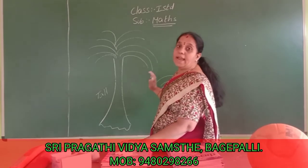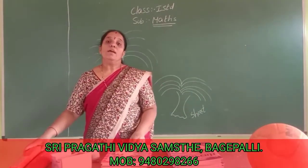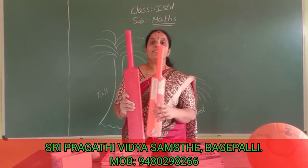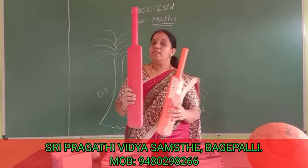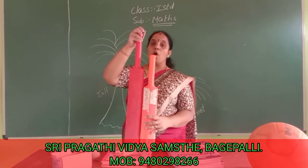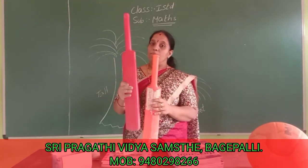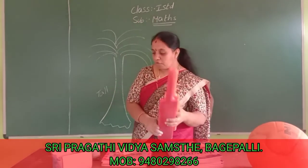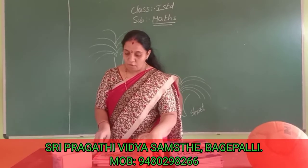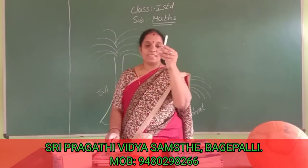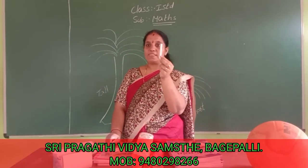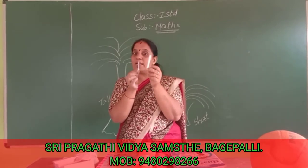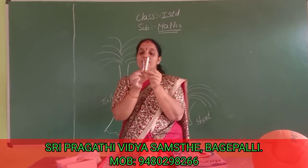Now I will show you another example of tall and short. See this one — what is this one? This is a bag. What is this one? This is also a bag. This one is a tall bag, this one is a short bag. See here — what is this one? Chalk piece. This is a tall chalk piece. What is this one? Pencil. Compare the two — this one is tall and this one is short.